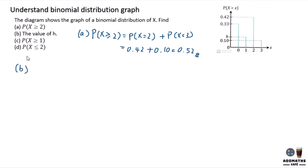To find the value of h, you know that the whole binomial distribution, if you plus all of them together, X equal to 0, X equal to 1, X equal to 2, and even X equal to 3, all of them, if you plus together,